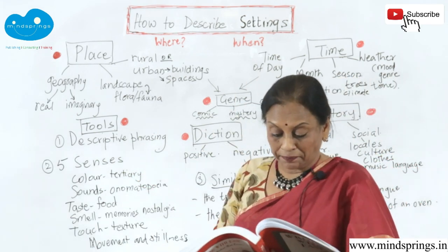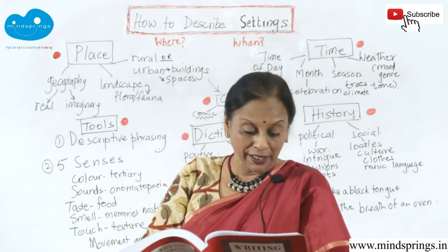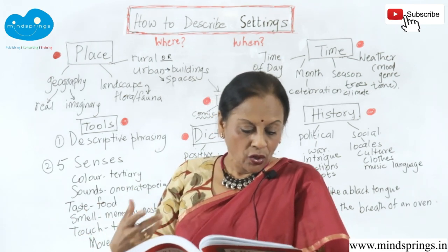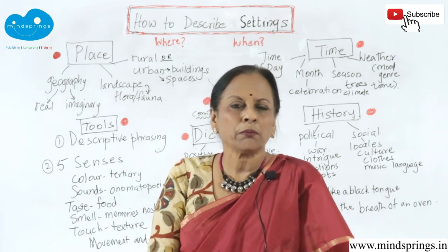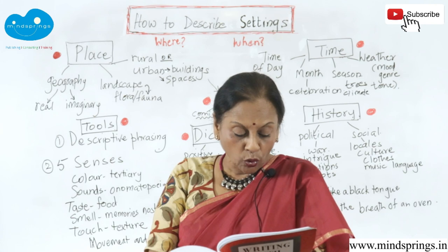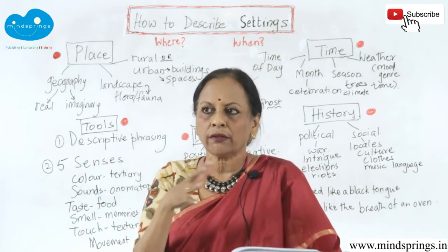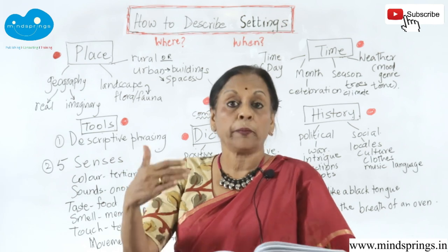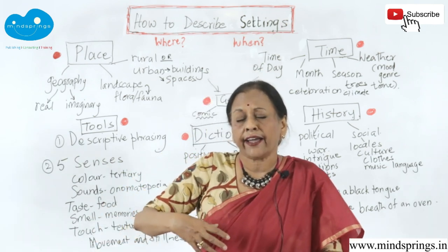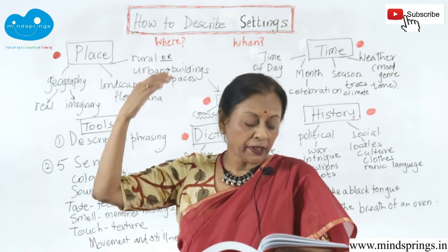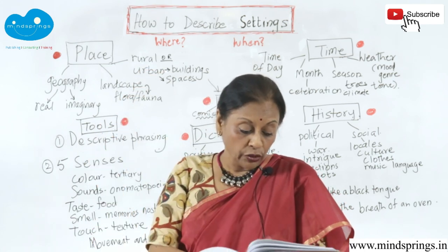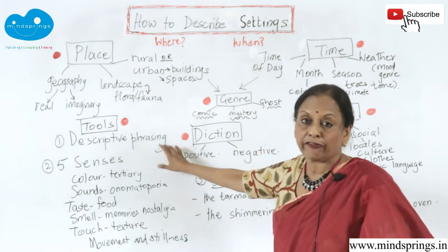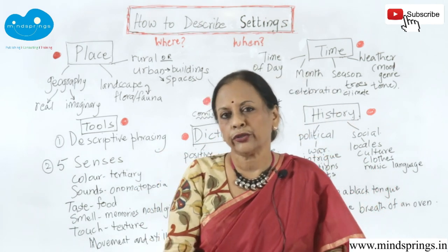Now let's come to descriptive phrasing — a great tool for settings. You could describe 'the treacherous marshy roads' or 'the reprehensible pre-monsoon heat' or 'cocooned by the velvet of the night' to create romance. Or 'the delirious dance of rain on the asphalt pavement' — if it's so hot that you're waiting for rain, it would be a delirious dance. 'Kissed by the moist rain-laden clouds' — by using fantastic words like these, you're using descriptive phrasing. Choose your words very cleverly.